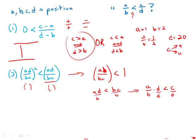Divide both sides now by d, and what we get is a over b is less than c over d. And this is the exact statement we are asked to verify.